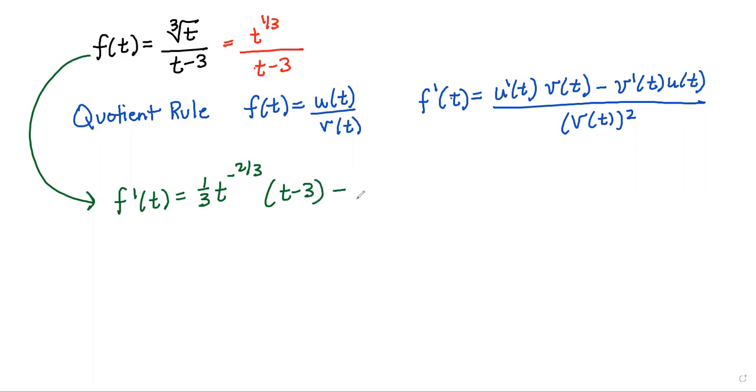Then I'm going to subtract and take the derivative of the bottom, where the derivative of t minus 3 is just 1, and then we multiply it by the top. And then we go all over the bottom squared.